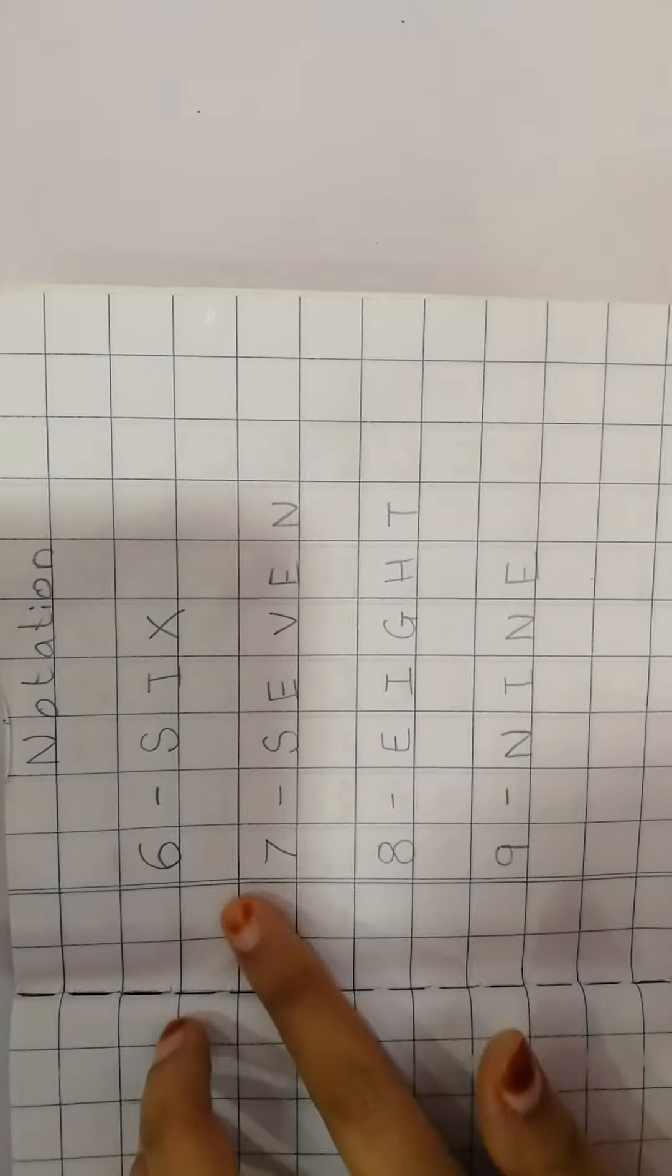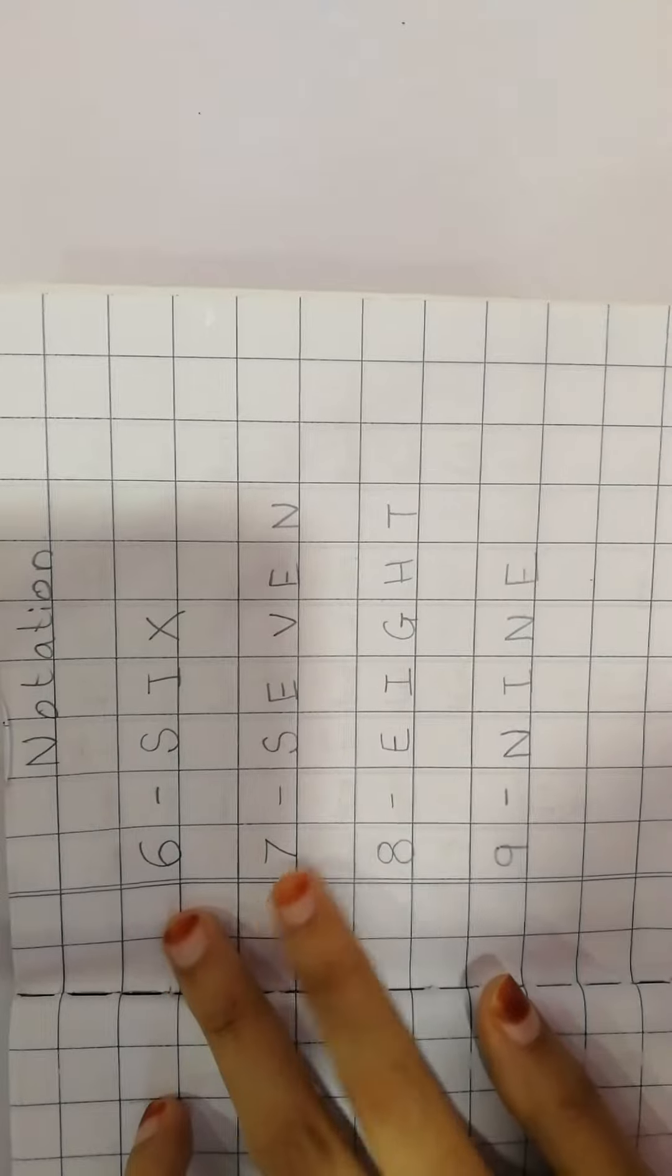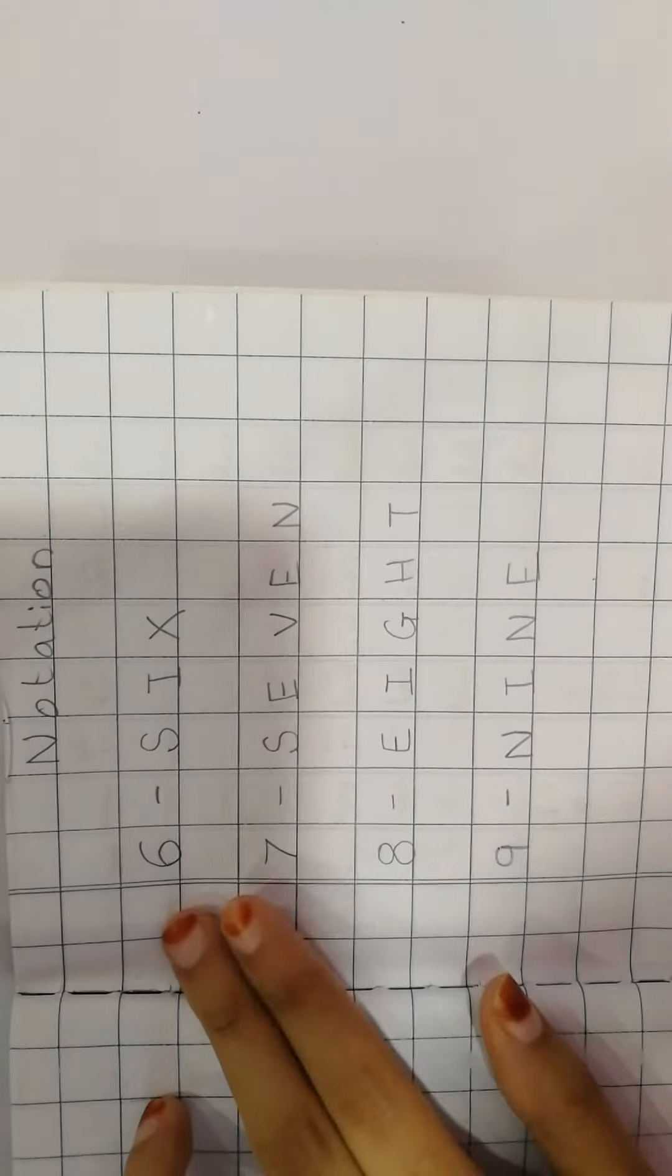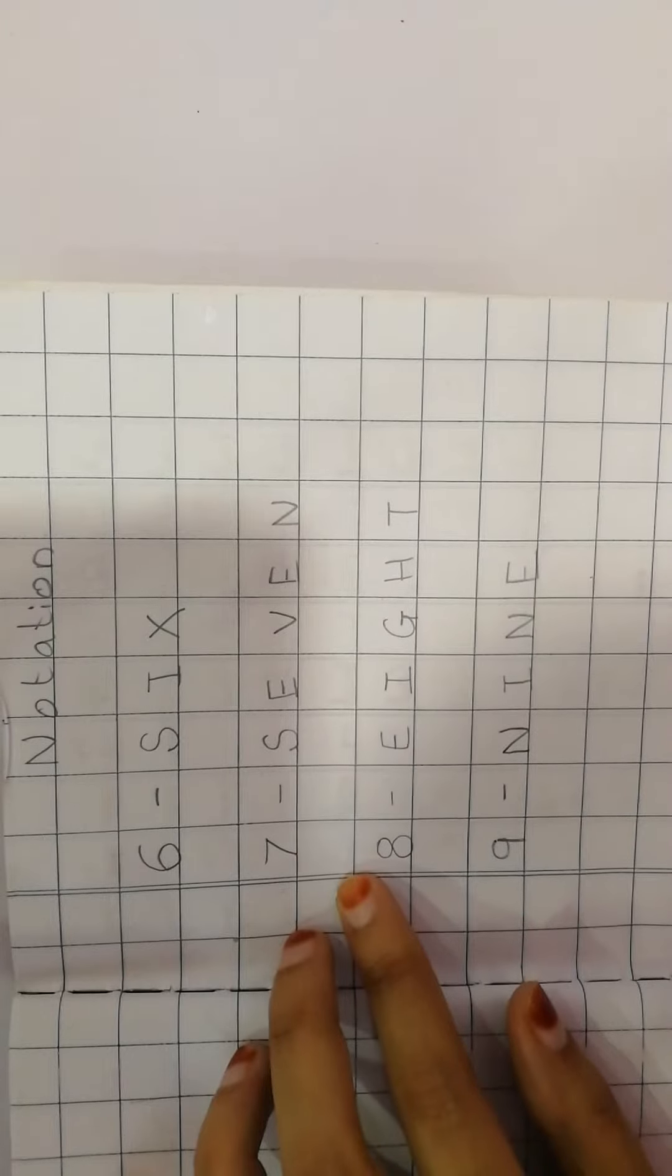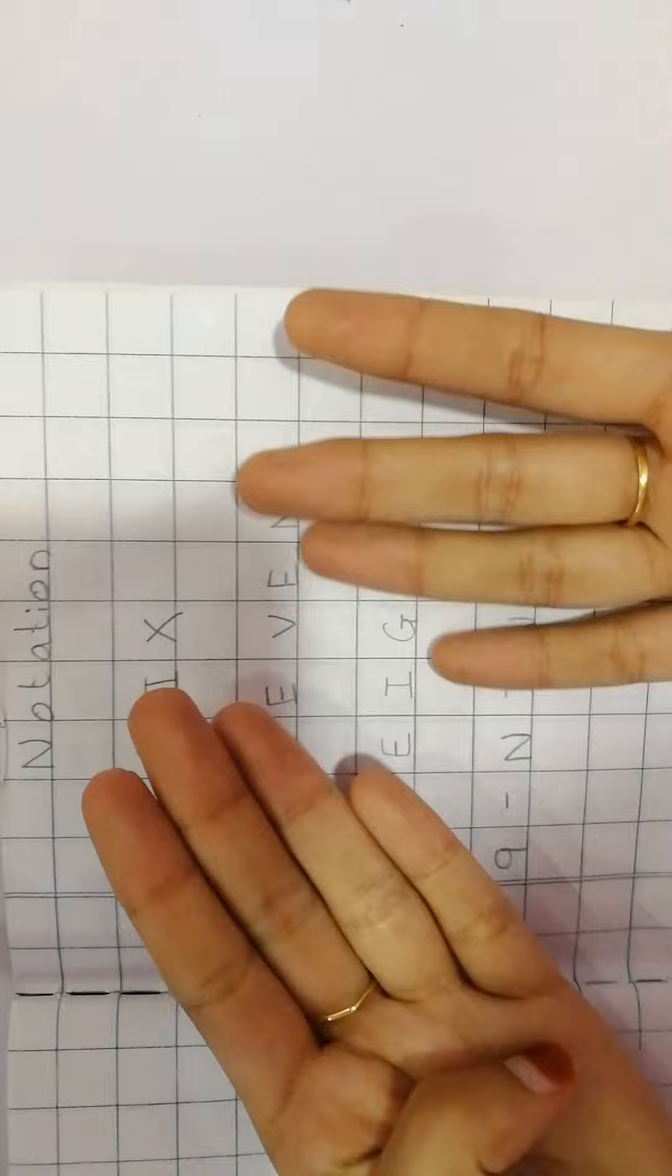Hello children. So children, see what are we learning? What are these? These are called notations. Number names. And we know number names from 1 till 9.